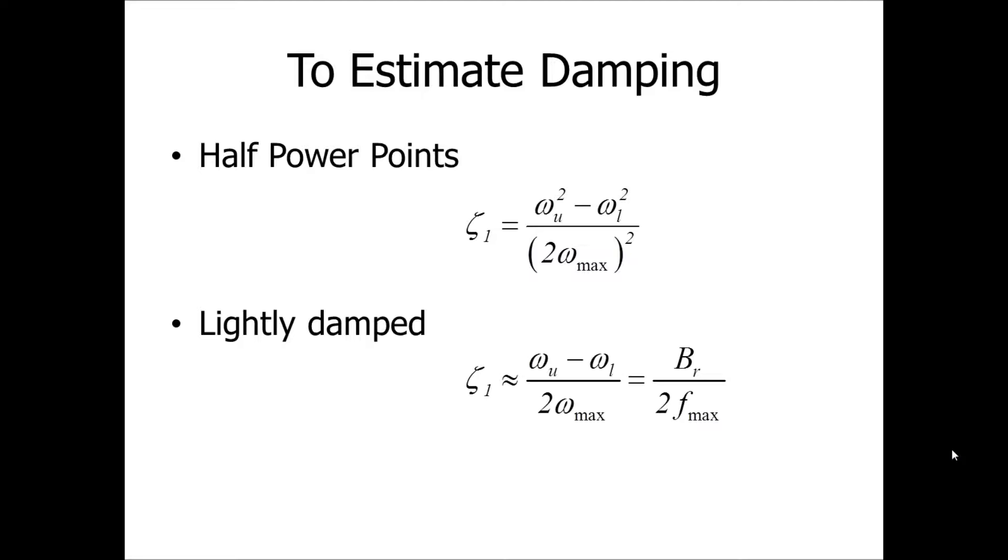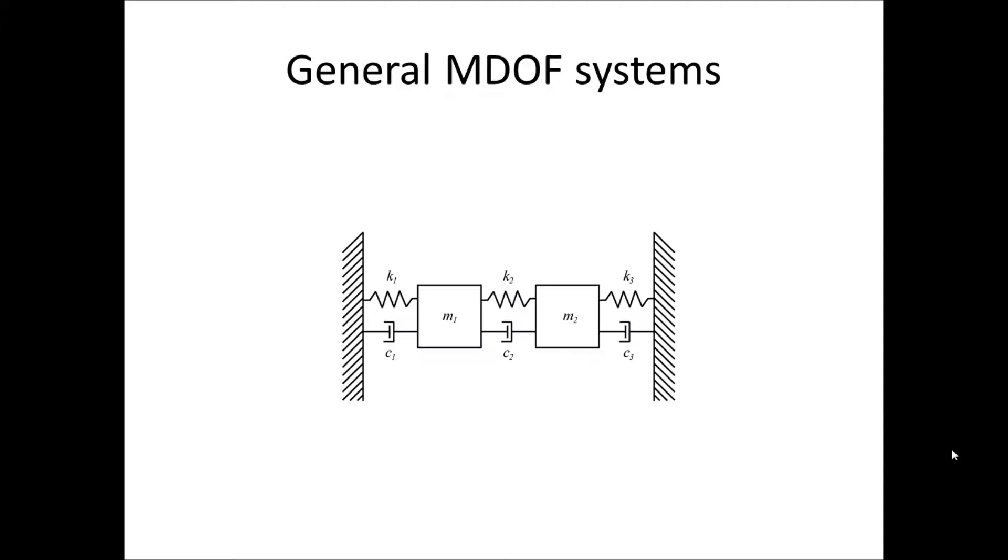this can be approximated by simply taking the upper frequency minus the lower frequency, divided by 2 times the center frequency, the max frequency. And this is, of course, either in omega or in F, gives the same result. So, this can also be written as BR divided by 2 times F max.